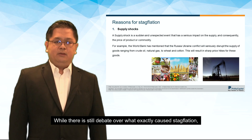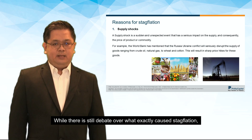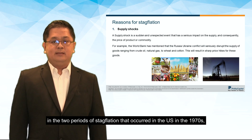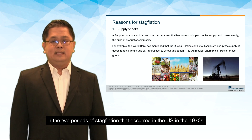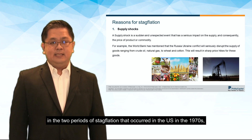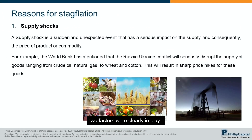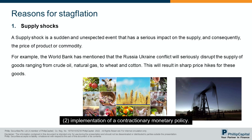While there is still debate over what exactly caused stagflation in the two periods of stagflation that occurred in the US in the 1970s, two factors were clearly in play: supply shock and implementation of a contractionary monetary policy.